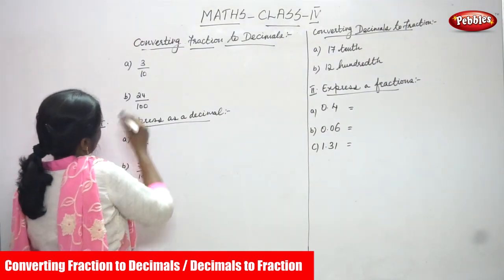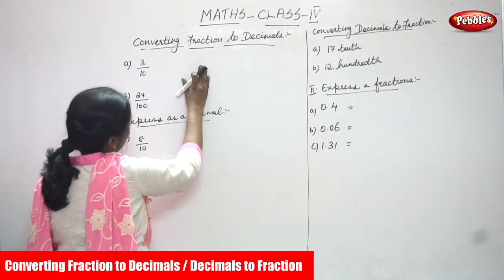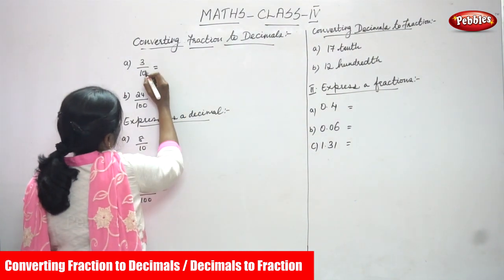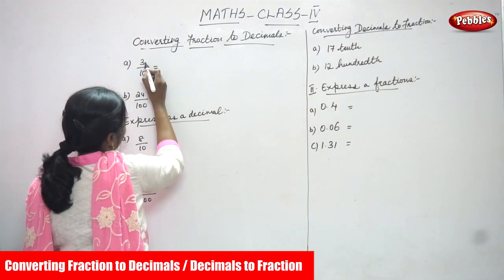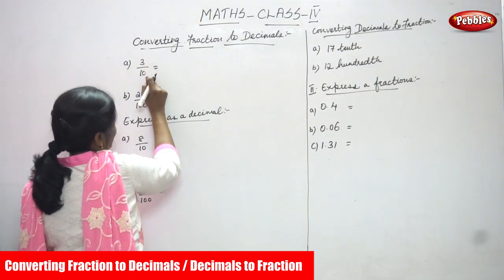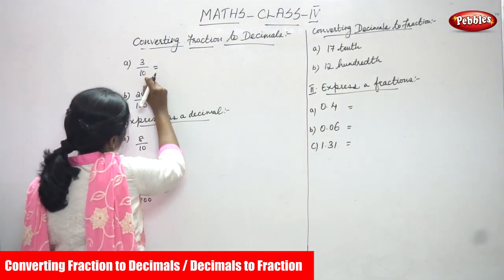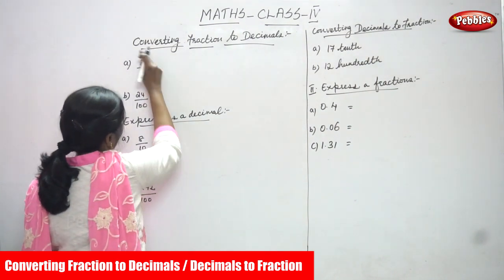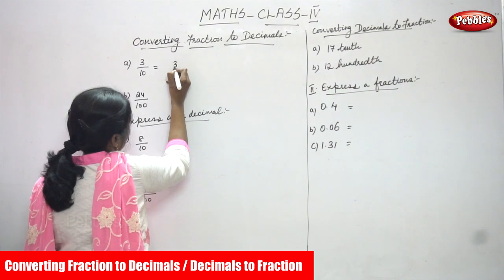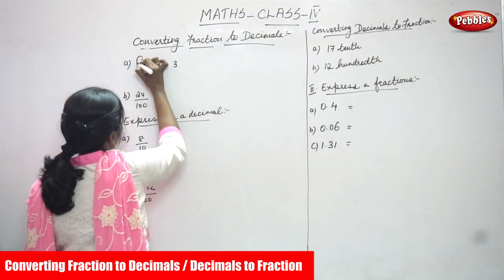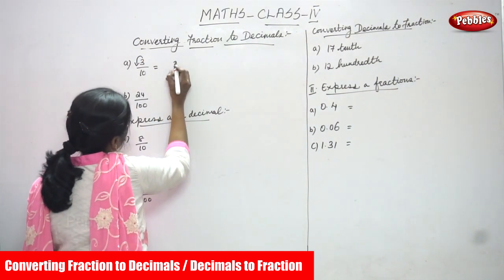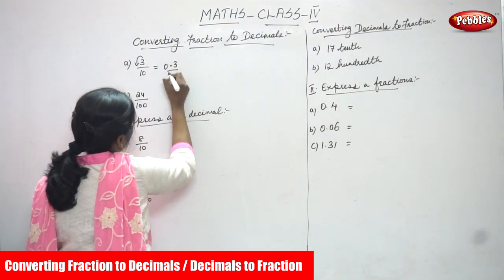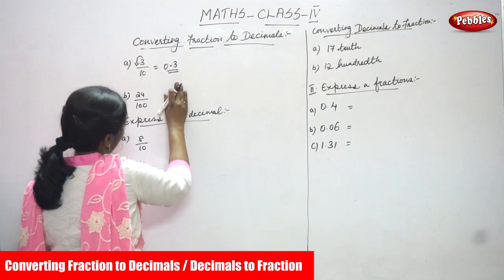a is equal to 3 by 10. So this is a fraction and you are going to convert it as a decimal. 3 is the numerator and 10 is the denominator. How many zeros in 10? Only one zero. So you have to move only one point. After writing 3, you put the point and add 0 in front. The answer is 0.3. This is a decimal.